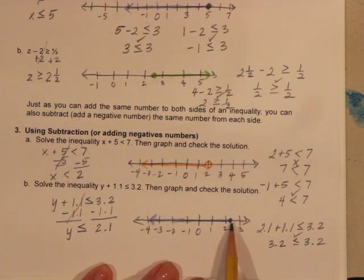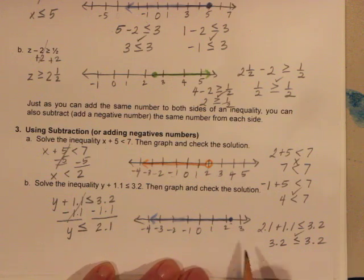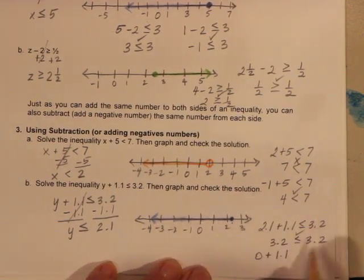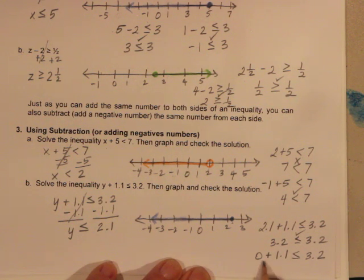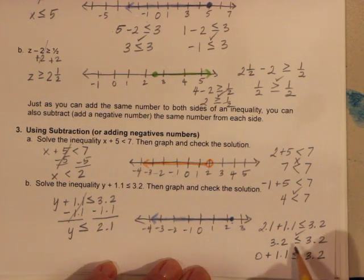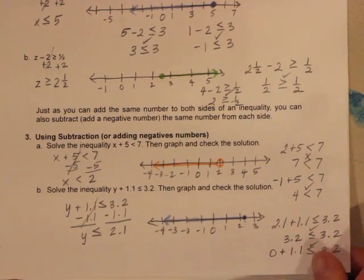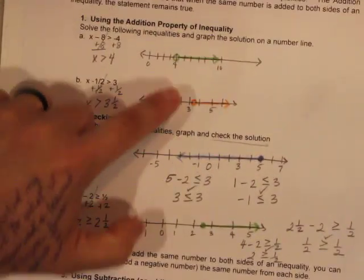I also check a value along the solid line — let's try y = 0: 0 plus 1.1 is 1.1, and 1.1 is less than 3.2. Yes, that checks out. My work is correct and everything is in line.